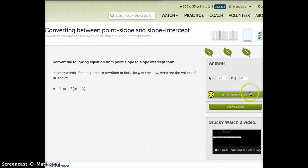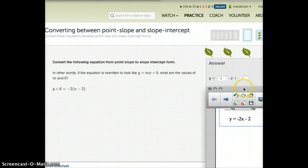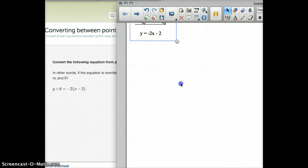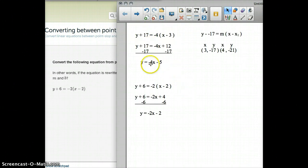So hopefully that makes sense on how to do the converting between point-slope and slope-intercept form. Hopefully it's not too difficult and you guys can master that quite well. If you need to take notes on either the first example or the second example, there they are for you. And I hope you have a great day and master this concept quickly. Thanks. Bye-bye.